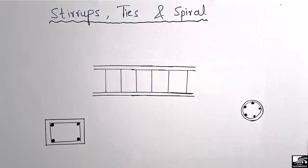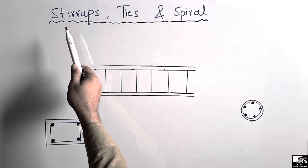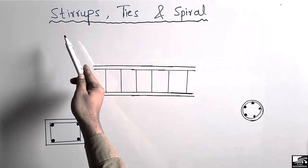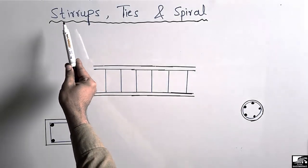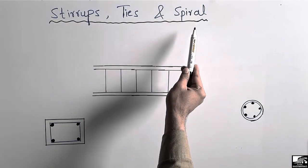Hello guys, welcome back to E7 Engineering YouTube channel. In today's lecture we are going to differentiate between three technical terms used in concrete construction: stirrups, ties, and spirals.